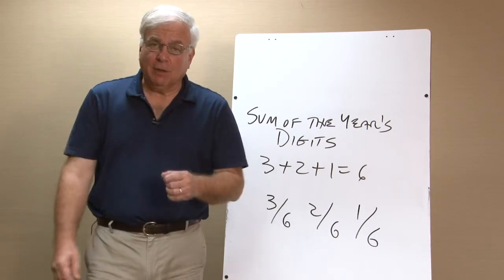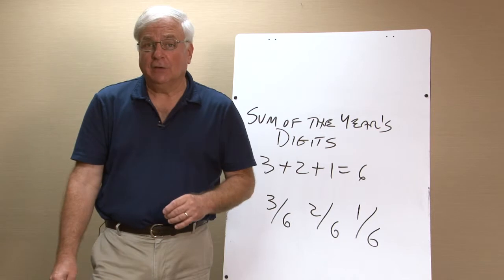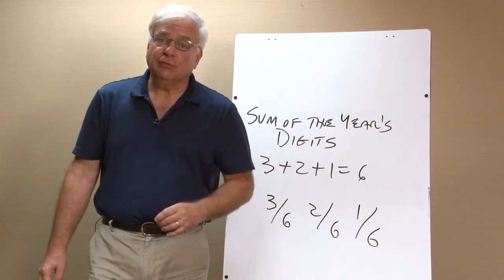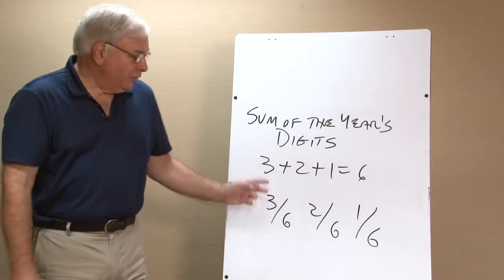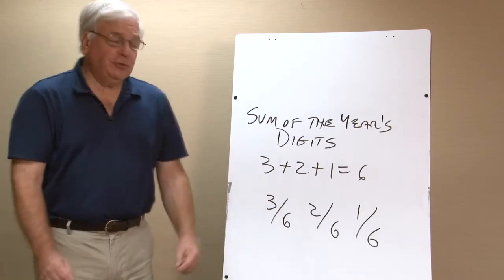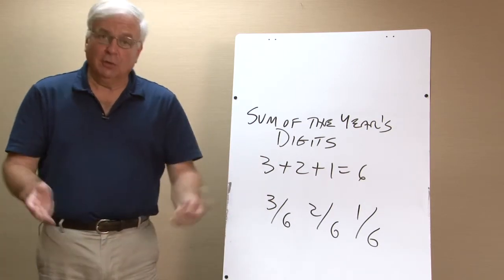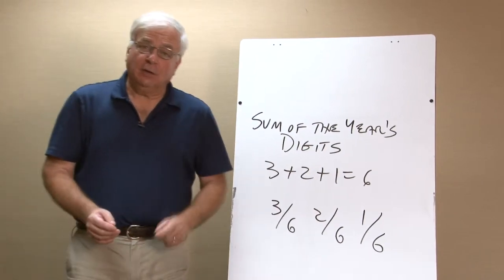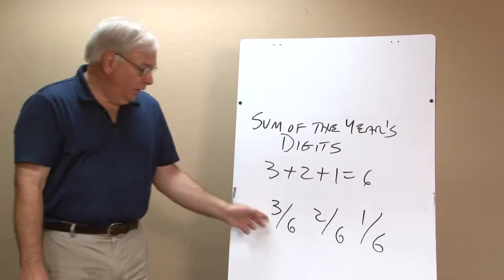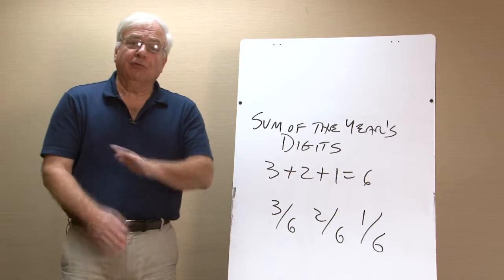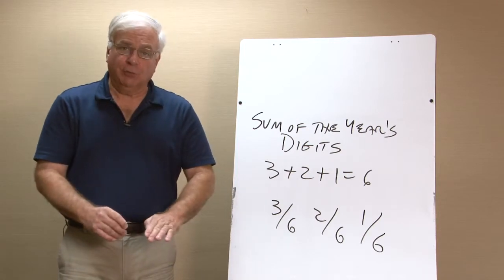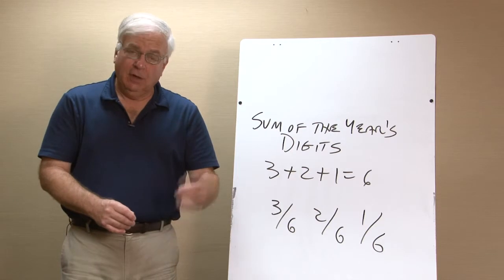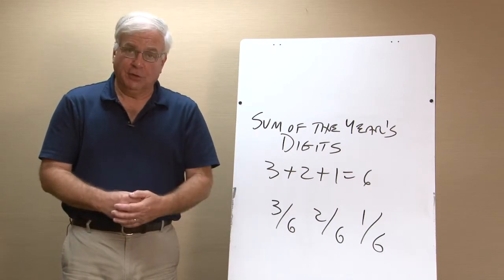Another accelerated method seen in day-to-day practice is sum of the years' digits. With a three-year asset, take the sum of the years: 3 + 2 + 1 = 6. You would use 3/6 of the depreciable amount in year one, 2/6 in year two, and 1/6 in year three.